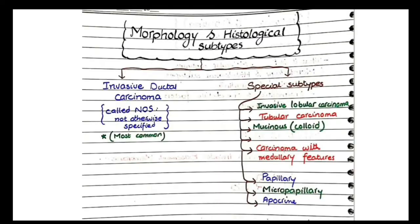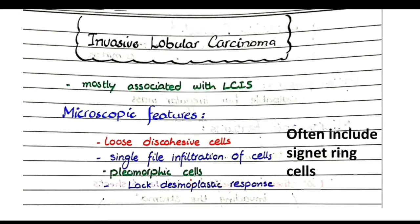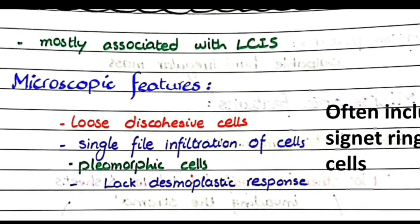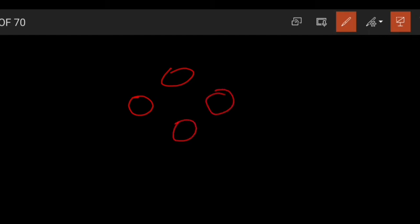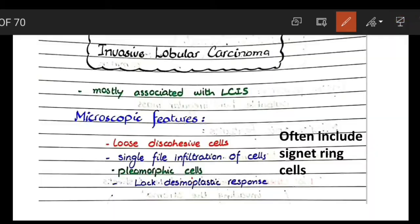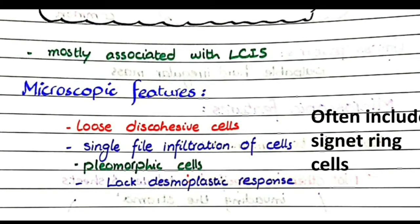The second category is invasive lobular carcinoma, which is mostly associated with lobular carcinoma in situ. Its microscopic features include loose discohesive cells, just as in lobular carcinoma in situ, where cells are far from one another due to a mutation in the protein E-cadherin, whose responsibility is to adhere cells. In invasive lobular carcinoma, cells are discohesive and show single-file infiltration, and often the cells are pleomorphic.